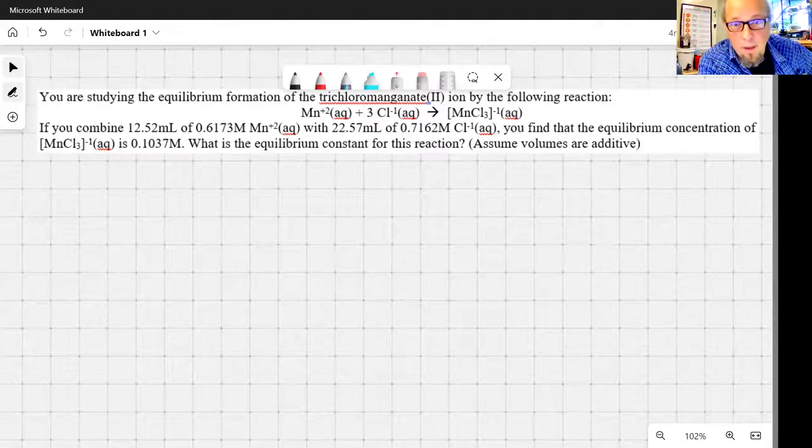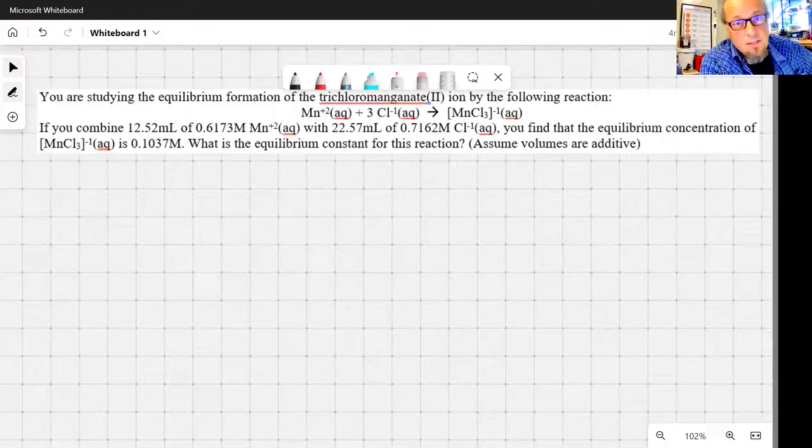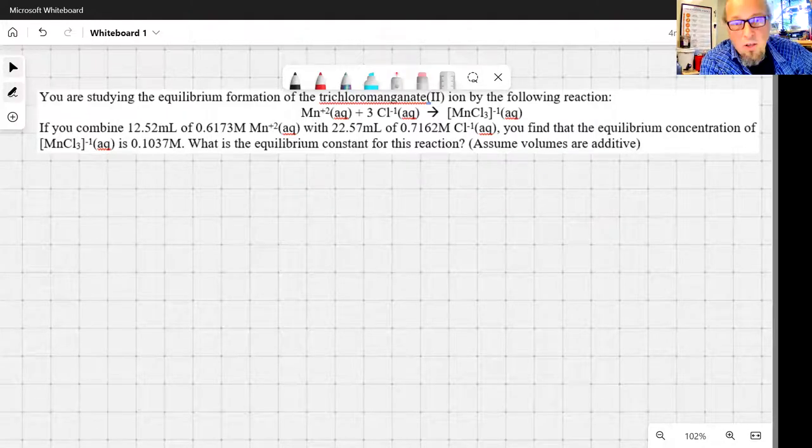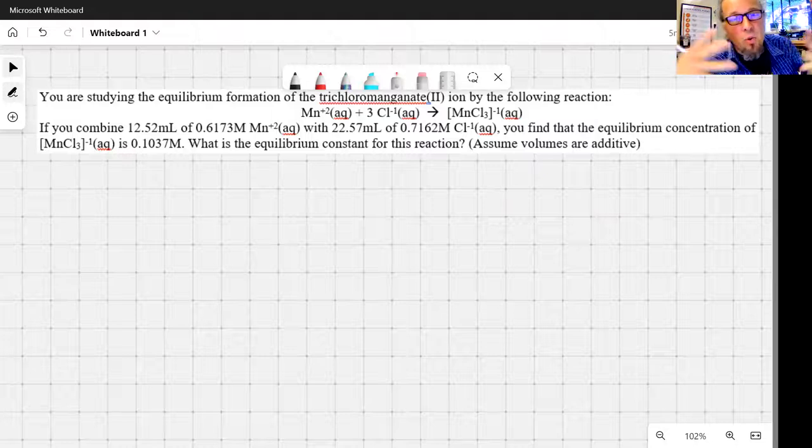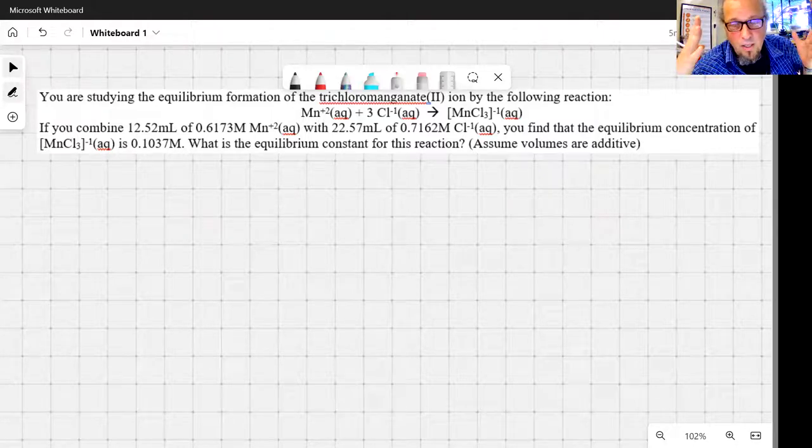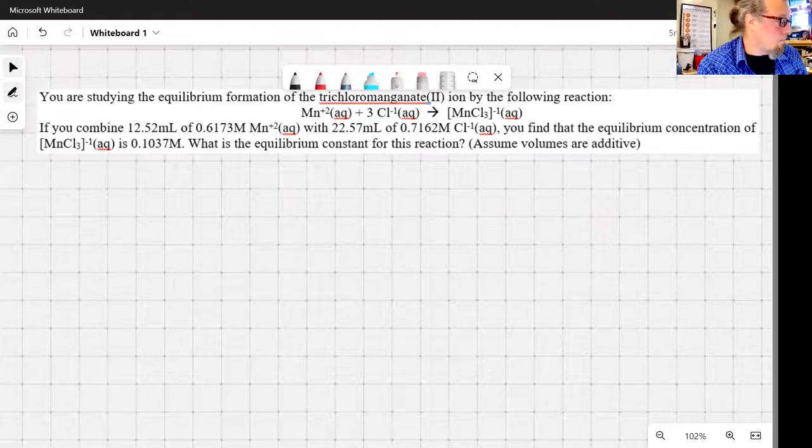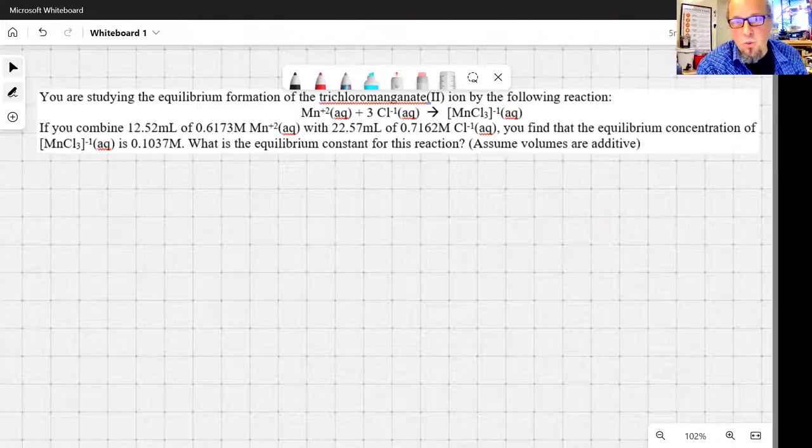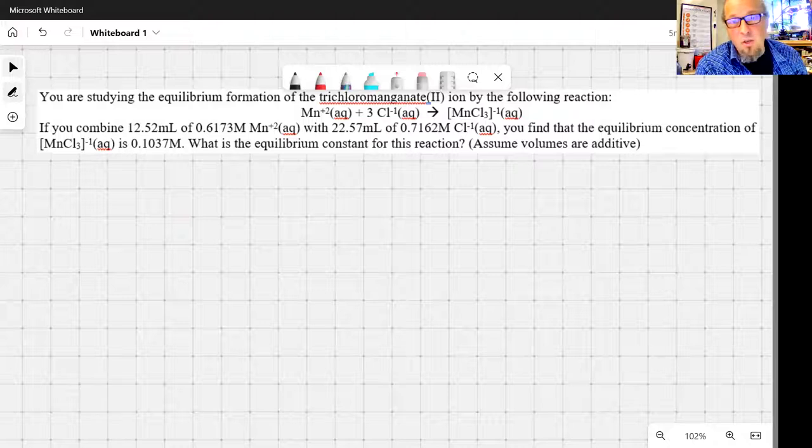So we're looking for an equilibrium constant. One little note, that parenthetical statement at the end is important. Assume volumes are additive. All that really means is when we mix everything together, we can assume that the total volume is equal to just the sum of the volumes of everything we added in. That's not always strictly true when we're actually doing an experiment, but for the purposes of this, we're going to assume that the volumes are additive.